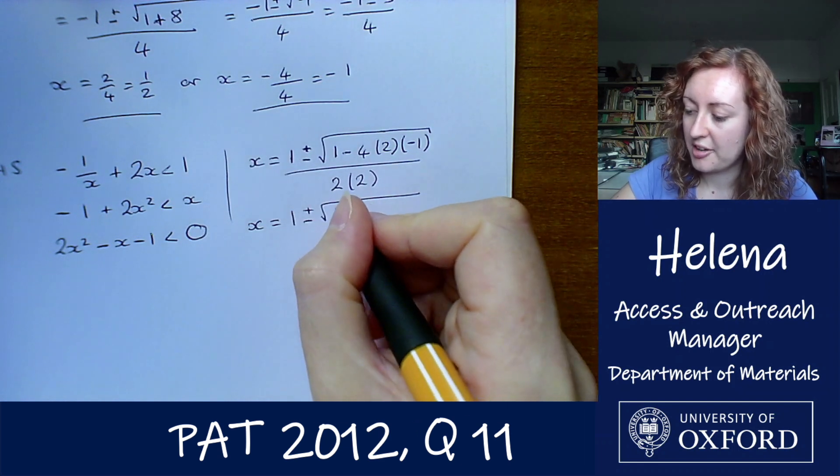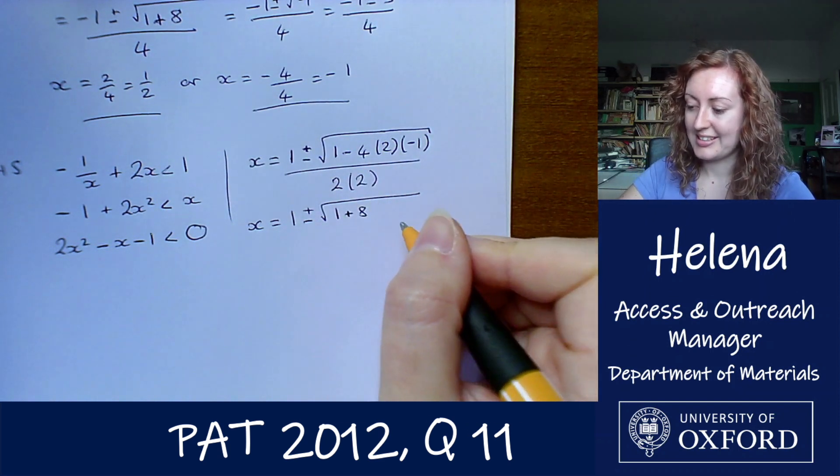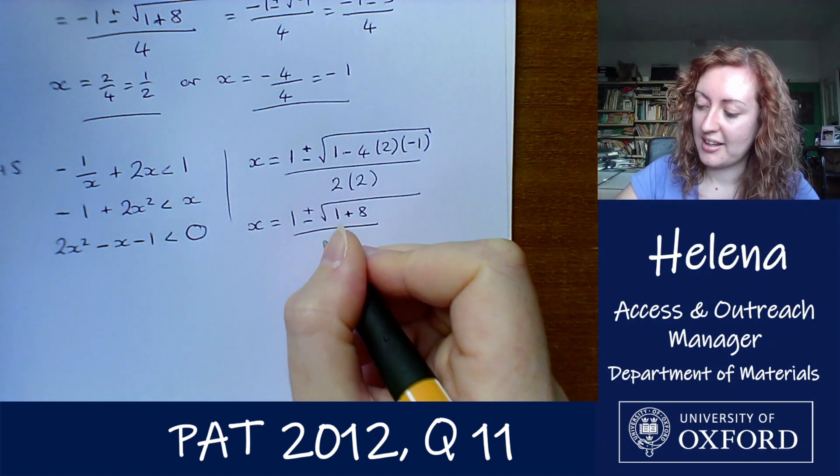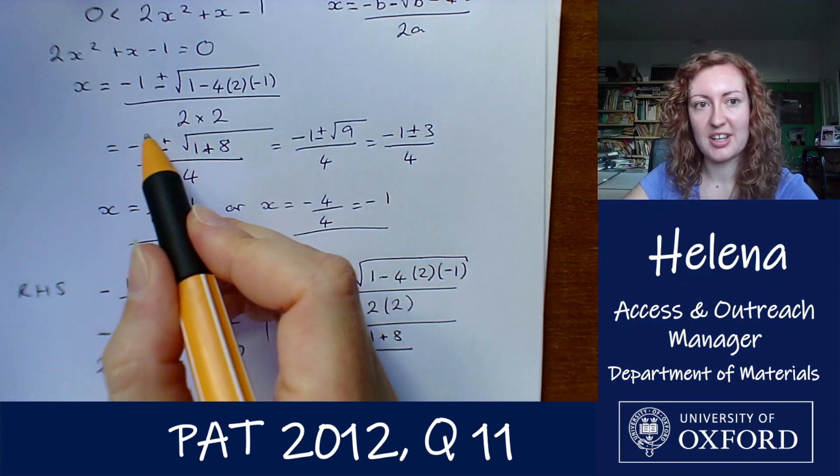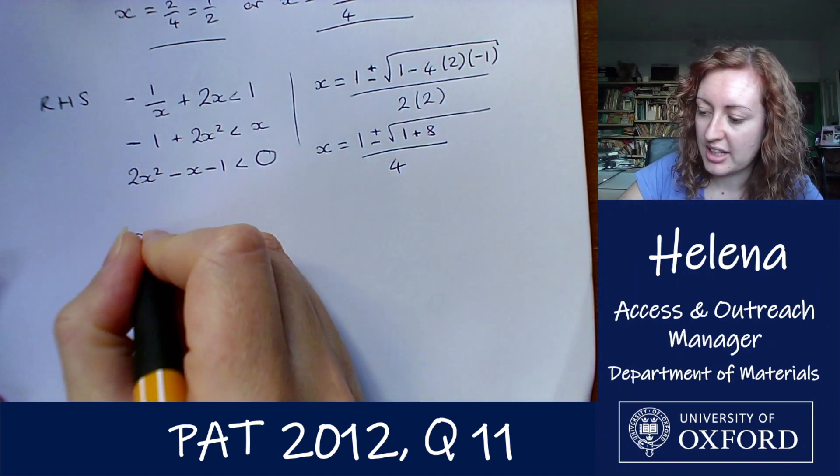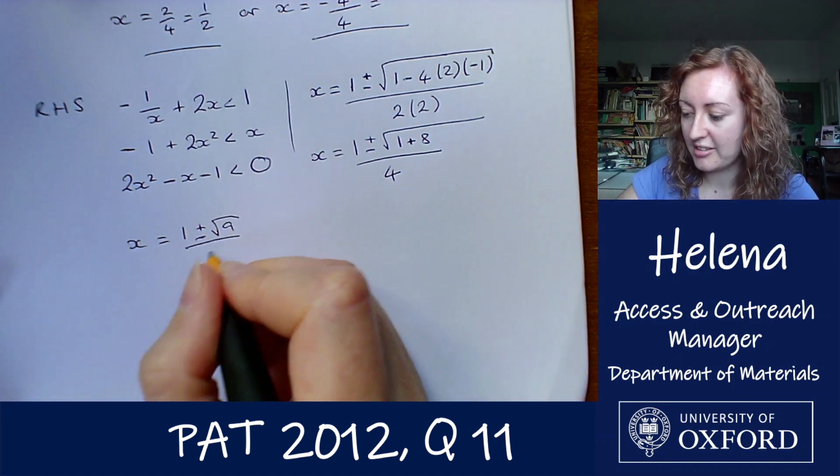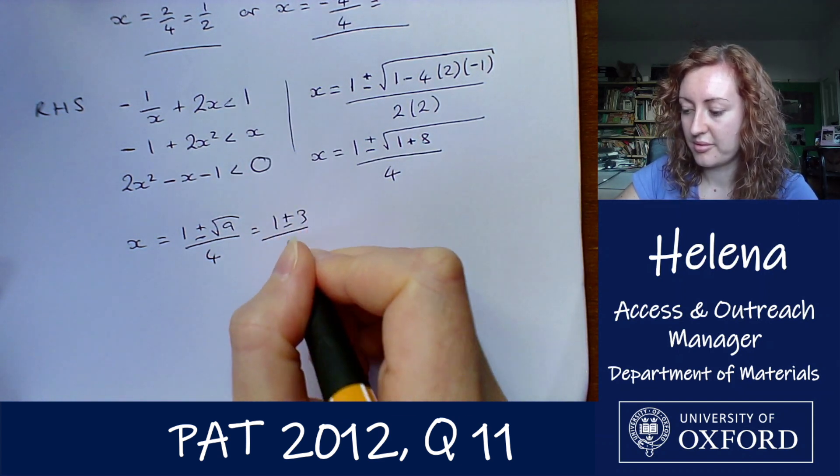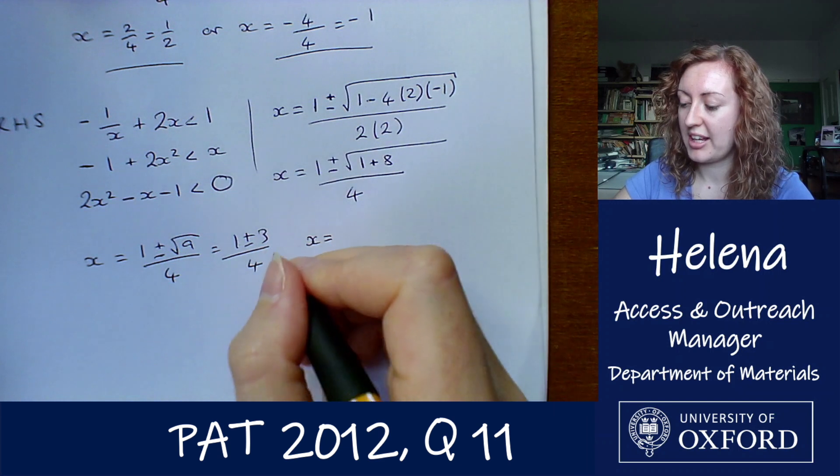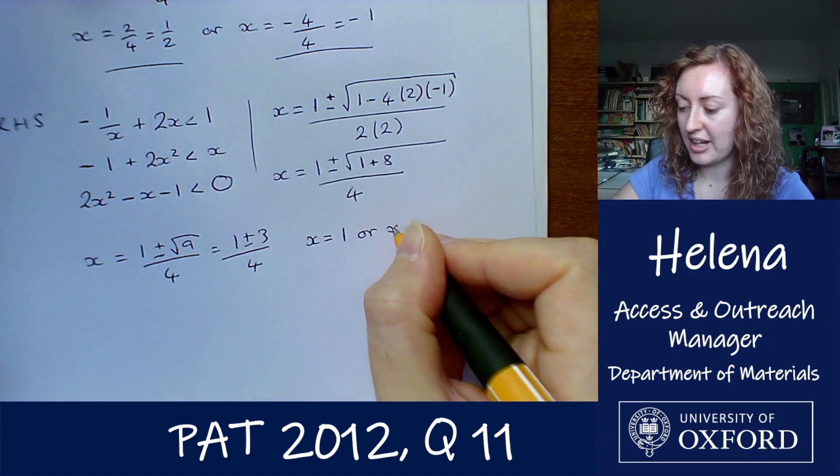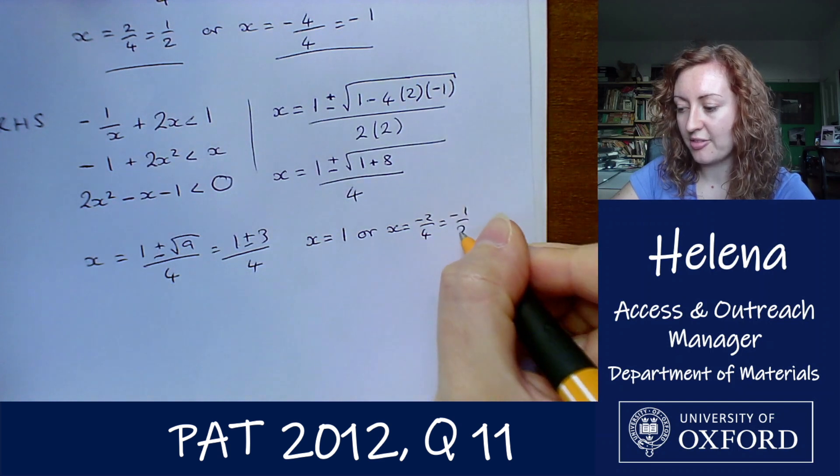Let's simplify that. We have 1 minus, we've got 8, again we've got plus 8 in the brackets, divided by 4. So again it's looking very similar to the one above, we just have a slight change of sign. So we have x equals 1 plus or minus the square root of 9 over 4. The two roots are x equals 1 plus 3 which is 4 divided by 4, so we have 1, or x equals 1 minus 3, minus 2 divided by 4 which is minus half.